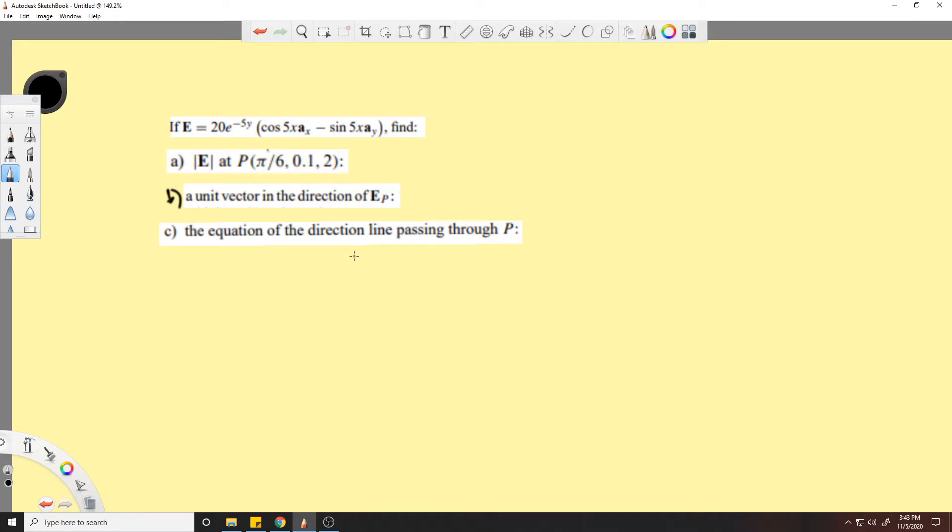Basically a streamline or electric field line. Okay, so how do we find E at P? You just plug in P into the different points. So let's start. E_P is equal to 20 e^(-5y), there's a y here, plug in the y for 0.1 because that's our y component, cosine of 5 times x.